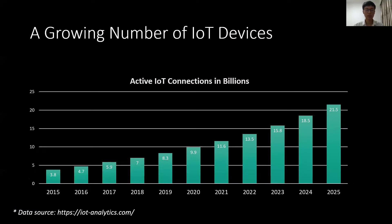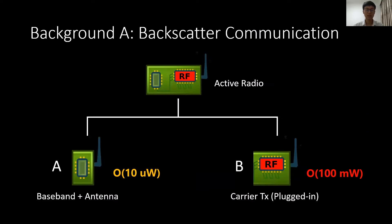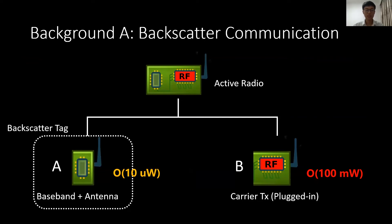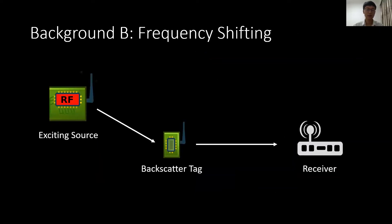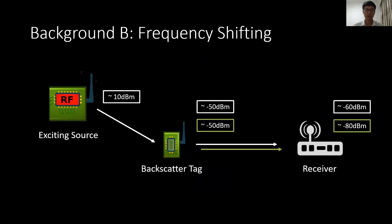In recent years, we have witnessed rapid growth in the number of IoT devices, and this growth poses two challenges for IoT networks. One is low-power communication and the other is connection capacity. Backscatter communication has been proved to be a promising technology that can achieve low-power operation. For a backscatter tag, it only keeps the baseband part and offloads the carrier generation to the ambient environment or a plug-in device, so it only consumes tens of microwatts.